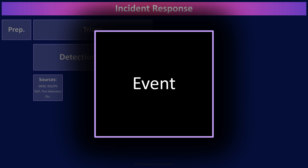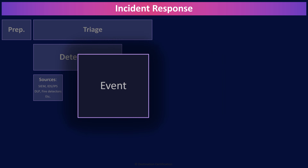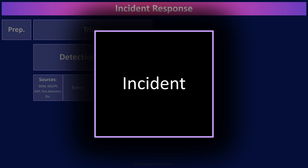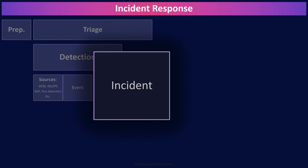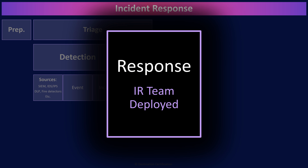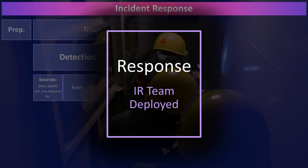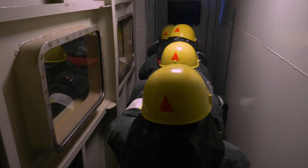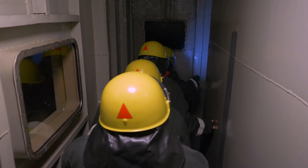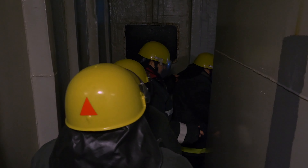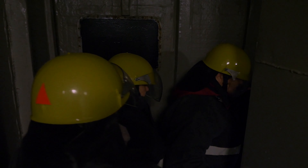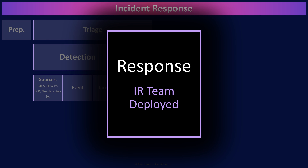Remember the difference between an event — an observable occurrence — and an incident, which is an event that has a negative impact on the organization. Once we've detected an incident, the next step is to respond by activating our incident response team. One of the first things the incident response team will do is conduct an impact assessment to determine the severity of the incident and how long it will take to recover. If the maximum tolerable downtime — the MTD — is going to be exceeded, then this will not be treated as an incident, but rather will declare a disaster and enact our BCP or DRP plans.